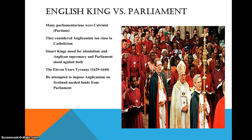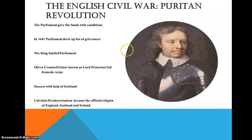The king attempted to impose Anglicanism on Scotland and needed funds from parliament, so he had to call parliament back. Parliament gave the funds he needed but with conditions, using the opportunity to present a list of grievances. The king then had his battle with parliament. Oliver Cromwell, later known as Lord Protector, led an Ironside army and had success with the help of Scotland. Calvinist Presbyterianism from Scotland became the official religion of England, Scotland, and Ireland at this time.